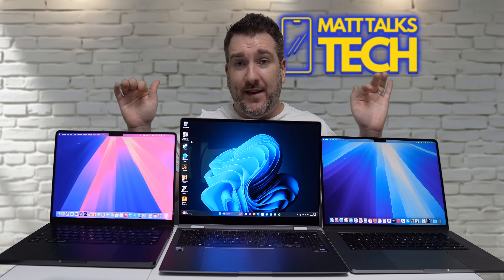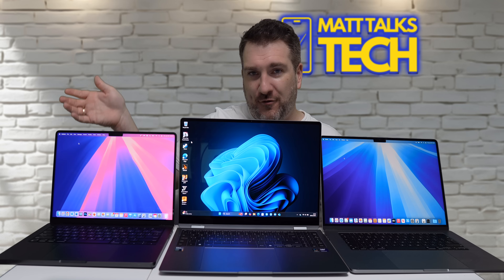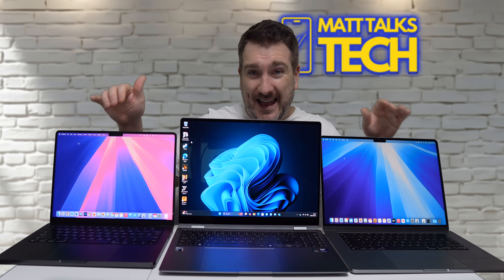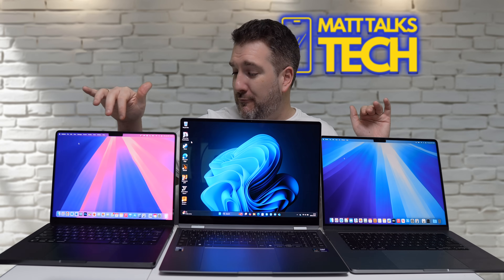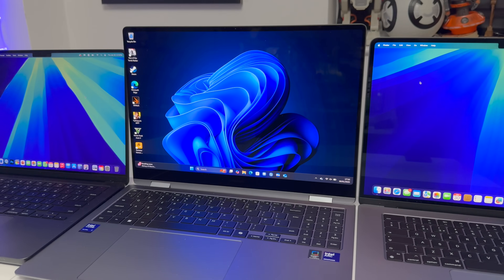After running all tests, the battery results in percentage remaining were: Galaxy Book 5 Pro at 61%, MacBook Air M3 at 58% — very close — and the MacBook Pro M4 at 72%. The M4 is super efficient and a big generational leap over the M3 in battery life. The MacBook Pro's slightly larger battery helps, but compared to the MacBook Air it's still impressive, with the mini-LED display also contributing.